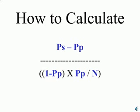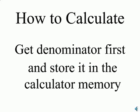By the way, we can reverse these two and take the proportion of the population minus the proportion of the sample and that will simply reverse the negative or positive sign. We're using a two-tail test so it really doesn't make any difference. The more difficult part of the equation is the denominator. My suggestion is get the denominator first and then store it in your calculator memory.